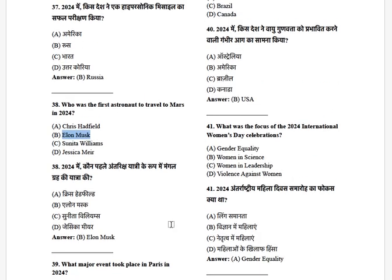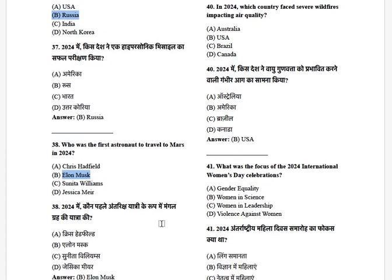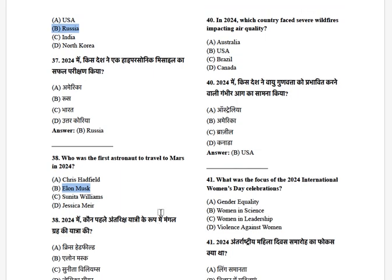In between, if some questions are wrong, don't worry — it would be only one or two percent. According to me it's 100% accurate, but because of some human error or misprinting, if there is any error, please don't create any issue. In 2024, which country faced severe wildfires affecting air quality? Options: Australia, USA, Brazil, Canada. The answer is USA.